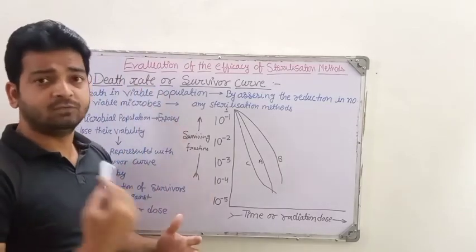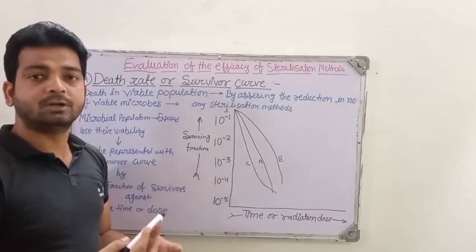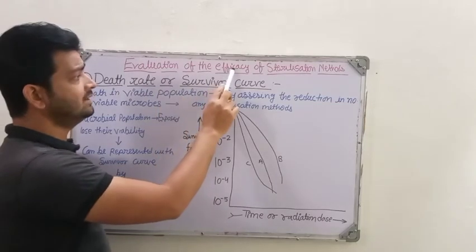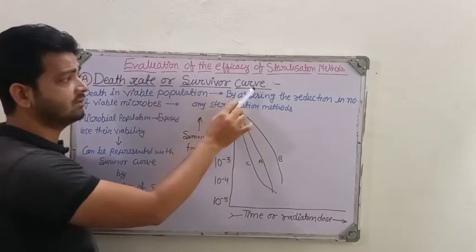We are trying to determine the efficacy of a particular sterilization method. How are we going to evaluate the efficacy of any sterilization method that we are using? We use death rate or survival curve.